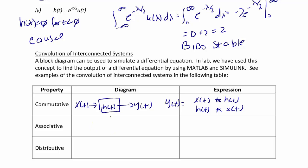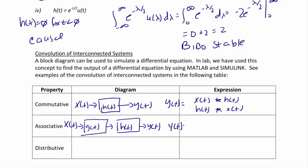For the associative property using a block diagram, the input x(t) goes into two cascaded systems, g(t) and h(t), producing output y(t). By using grouping, y(t) equals x(t) convolved with g(t) convolved with h(t), where you do x and g first. But that's equivalent to x(t) convolved with the combination of g(t) and h(t), where you convolve g and h first.